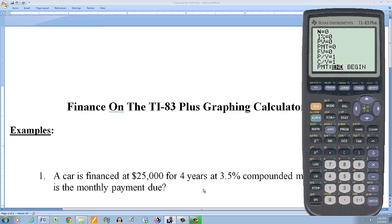So this is four years, compounded monthly. So N is really the number of payments. So that's going to be 4 times 12, that's going to be 48. So enter that value. The interest rate is 3.5%. So just enter 3.5%. The present value is the amount to be financed in this case, this is $25,000.